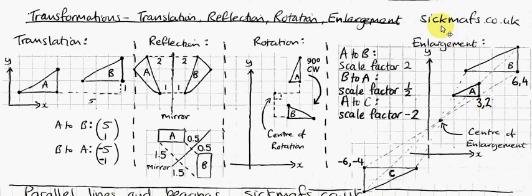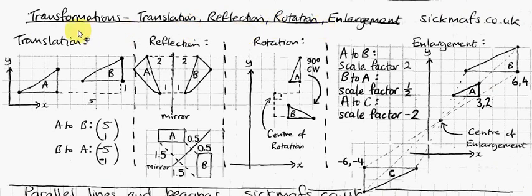Welcome to another video from sickmaths.co.uk where you find the whole GCSE Maths explained on video, all for free, and find some amazing revision guides. This one's about transformations. There are four different transformations — transformation means to change, like in Transformers where the robots change from one thing to the other. So there are four different ways of doing that.